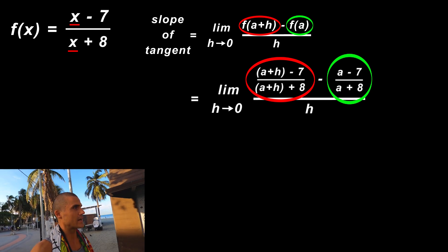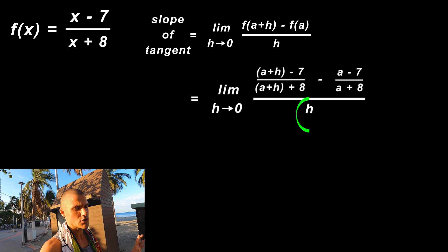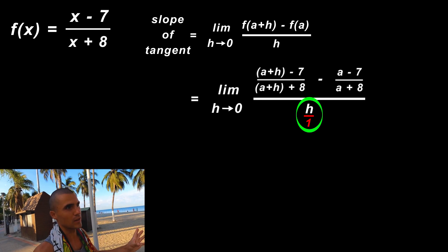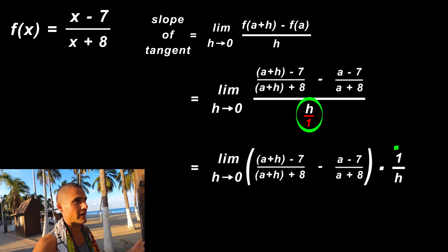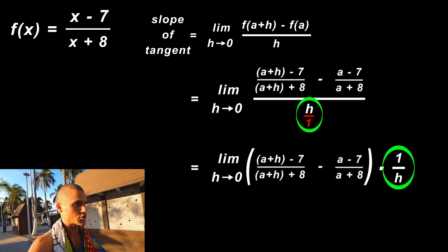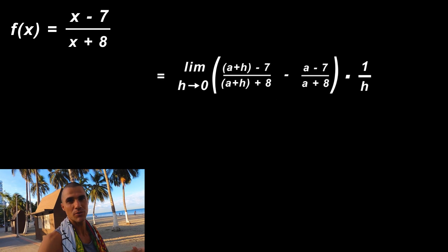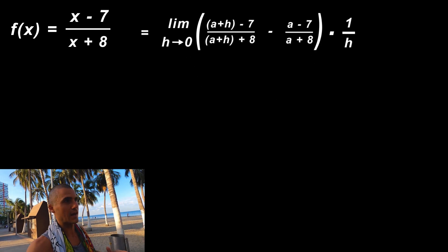Instead of dividing by h, notice it's like we're dividing by h/1. I'm just going to multiply that entire numerator by 1/h. Whenever I'm dealing with rational functions in this process, I prefer to do it this way because it's going to be more obvious how h's are going to cancel out.